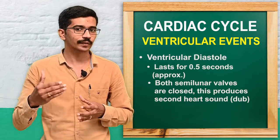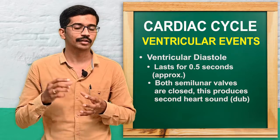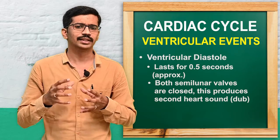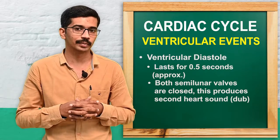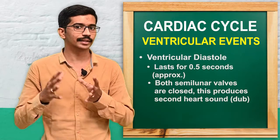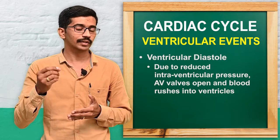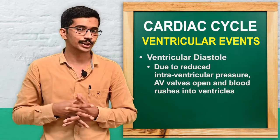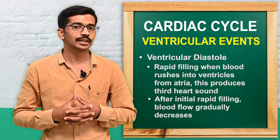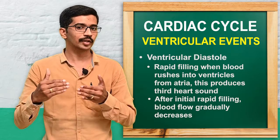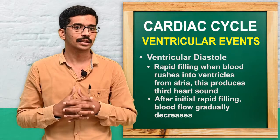Coming to ventricular diastole: this period is approximately 0.5 seconds. During ventricular diastole, both semilunar valves close, which produces the second heart sound, the 'dub' sound. As a result of reduced intraventricular pressure, the atrioventricular valves open and blood rushes into the ventricle. There is an initial rapid filling, with blood rushing from atria to ventricles, which produces the third heart sound. The blood flow then slows down and the ventricles are filled. This happens in a cyclic manner, which is termed the cardiac cycle.